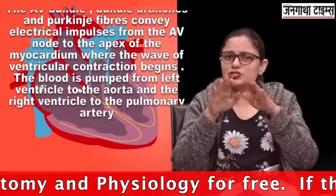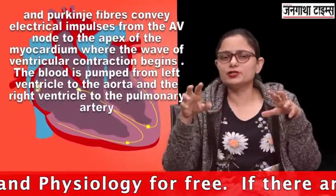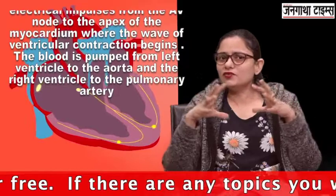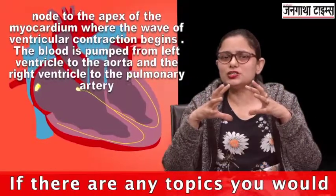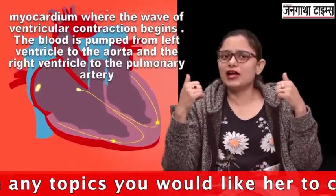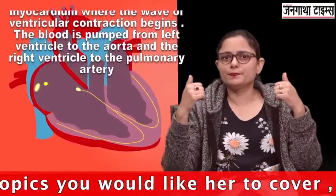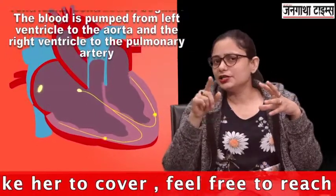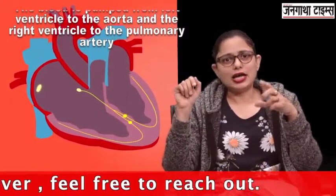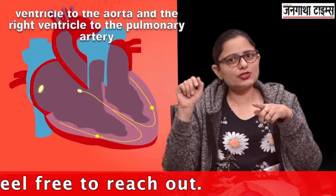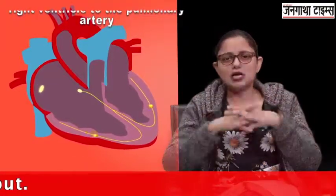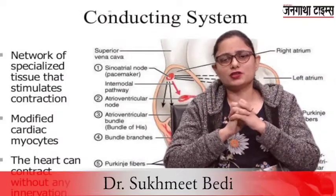When the impulse reaches these components, the ventricles contract. When the ventricles contract, the semilunar valves open. Blood from the left ventricle moves to the aorta, and blood from the right ventricle moves to the pulmonary trunk. This completes the conducting system of heart.